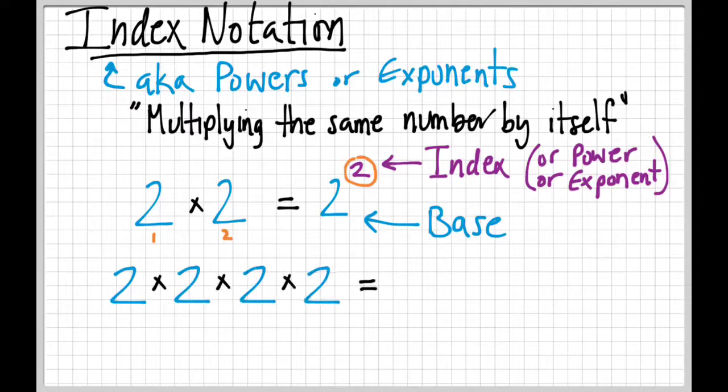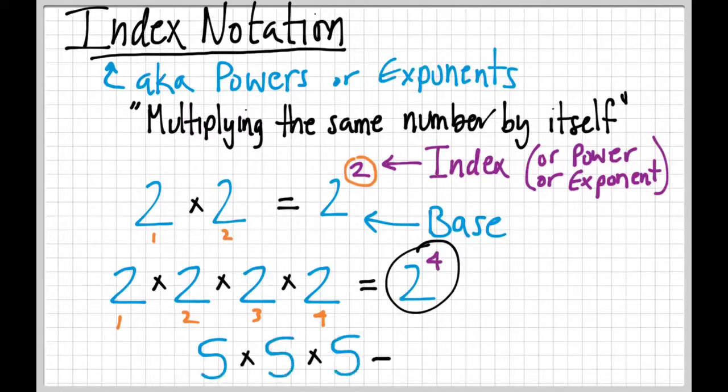Let's look at 2 times 2 times 2 times 2. This would have a base of 2. Whatever number we're multiplying by itself is the base, just like here. But now we have four 2s, so the index is going to be 4. If we have 5 times 5 times 5, then the base is 5 and the index will be 3. Pretty simple, right?